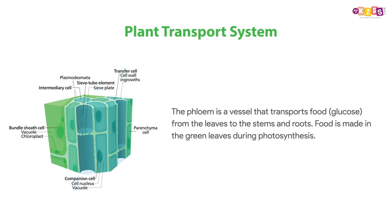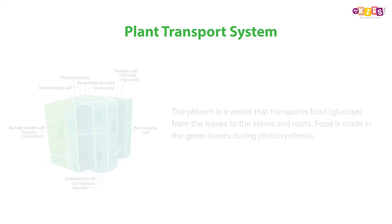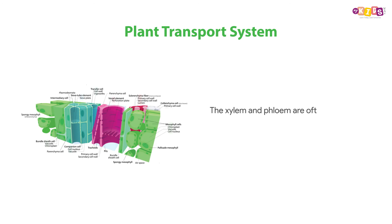Food is made in the green leaves during photosynthesis. The xylem and phloem are often found side by side, forming bundles called vascular bundles.